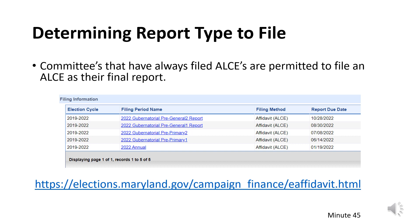Campaigns need to pay close attention to their past filing reports to determine the appropriate report to file. A committee can verify the filing types by logging into MDCRIS and selecting View/Edit Committee Registration from the left side menu. About halfway down the page, the committee will see the Filing Information section. If the filing method states affidavit or ALCE for all filing periods, the final report can be submitted as an affidavit. An example is shown on this slide. You can review the Filing an Affidavit of Limited Contributions and Expenditures chapter of the MDCRIS video, which begins at minute 45.